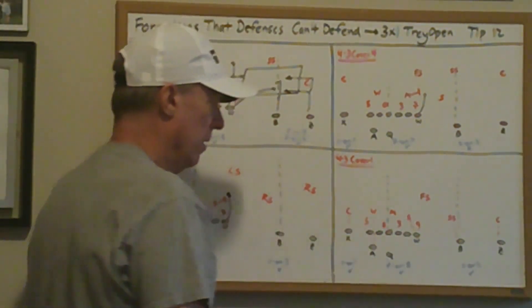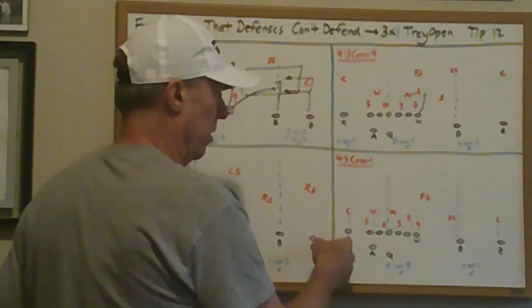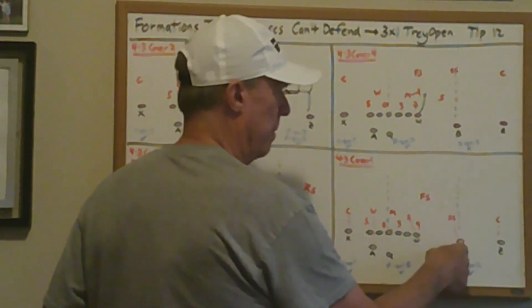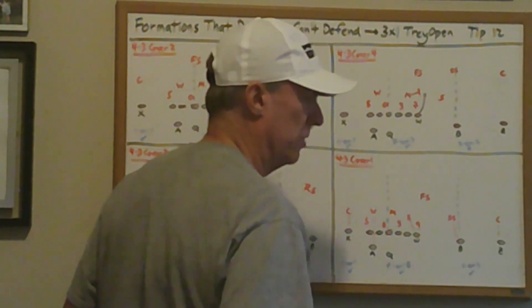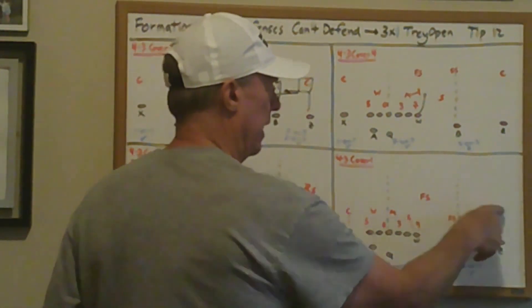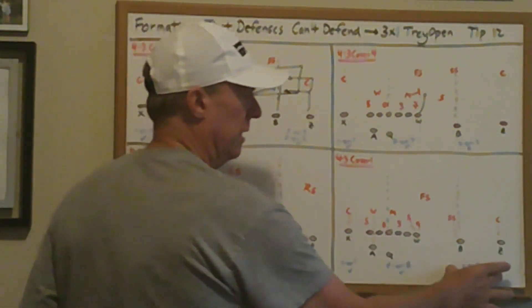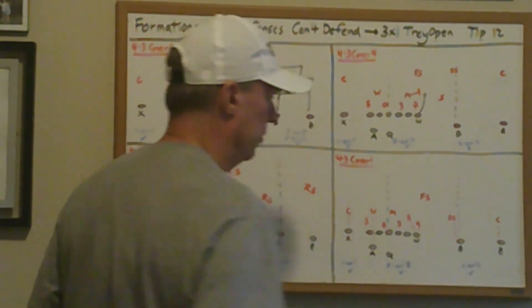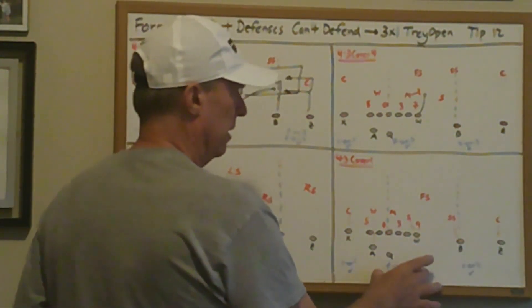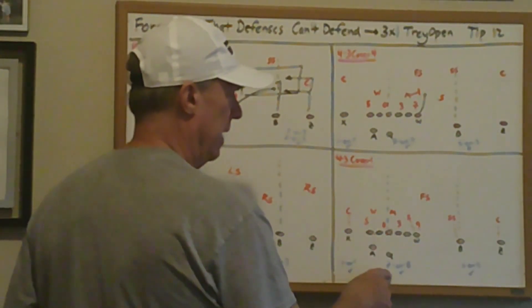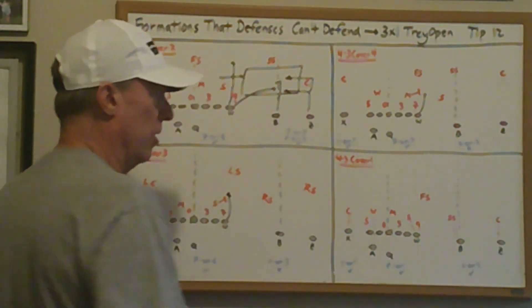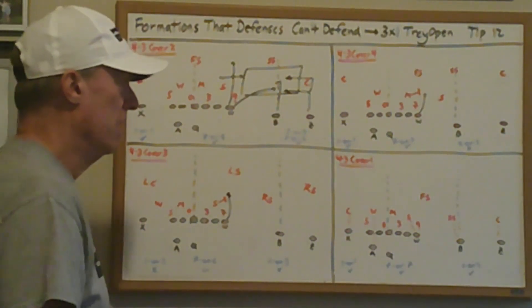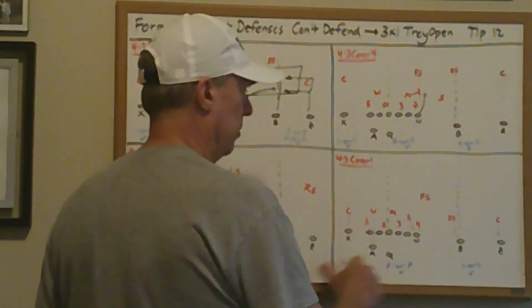In Cover 1, everything is man-to-man. The offense likes 1-on-1 with the X versus their corner. The Sam linebacker plays the tight end, the strong safety is man on the slot B, and the corner is man on wide receiver number one to the field. In Cover 1, the safety can only help on one of the three receivers on the trips side, so whether it's 2-on-2 or 3-on-3, the quarterback can read where the safety goes and throw to the other guys. The run box has seven defenders, but with six blockers, a ball carrier, and a quarterback, we're effectively 7-on-7 in the run game. Even against Cover 1, the offense can attack all three areas.